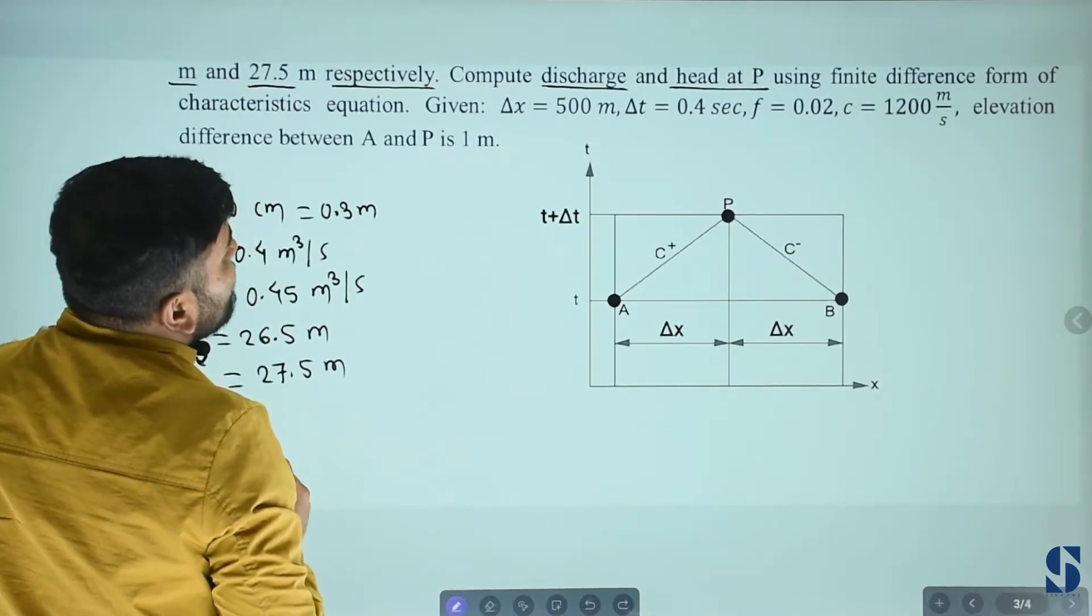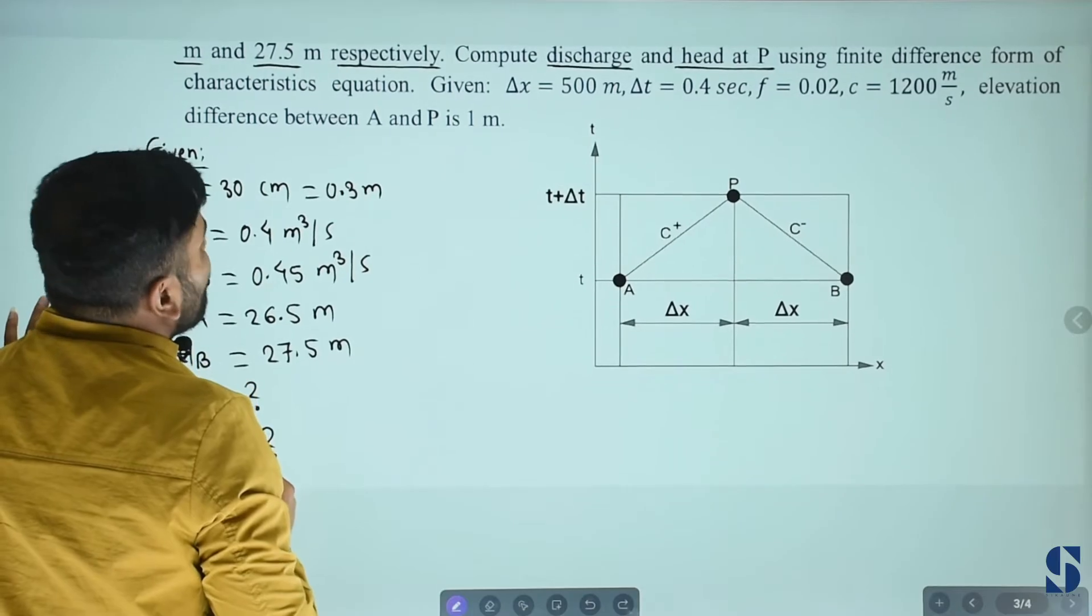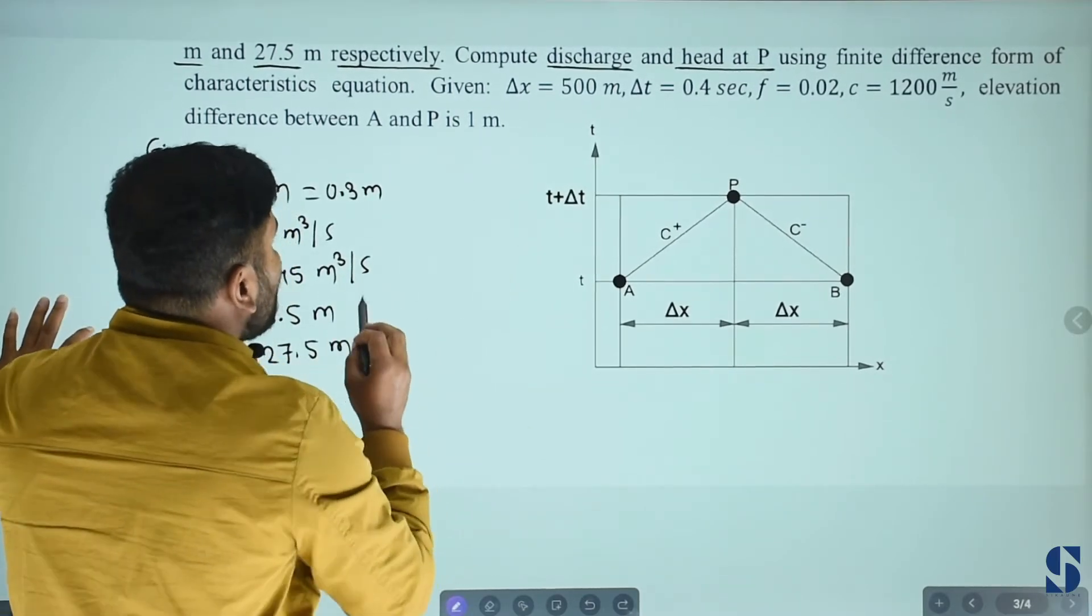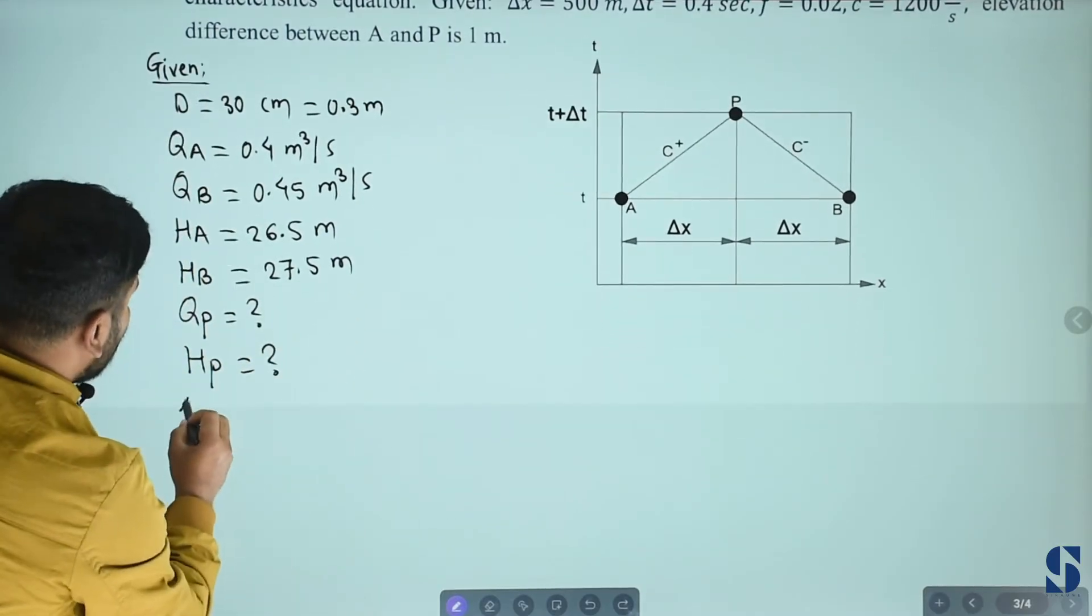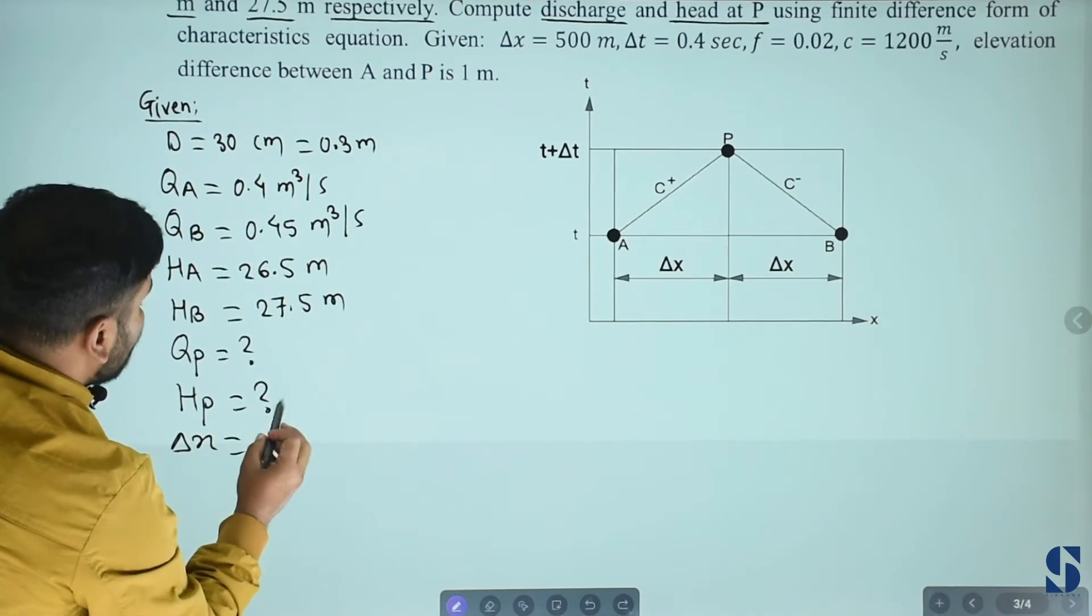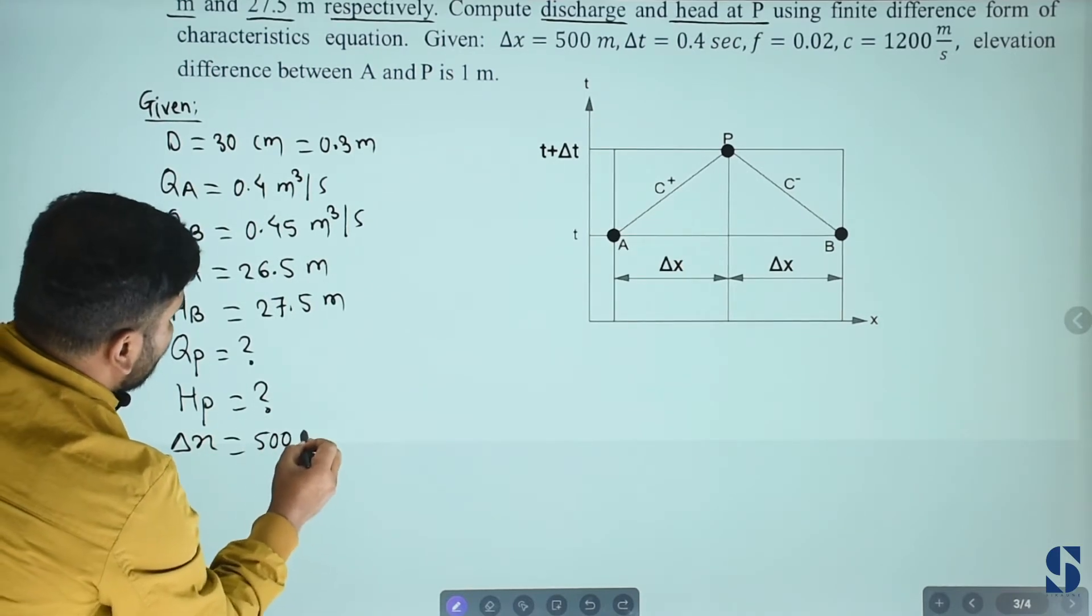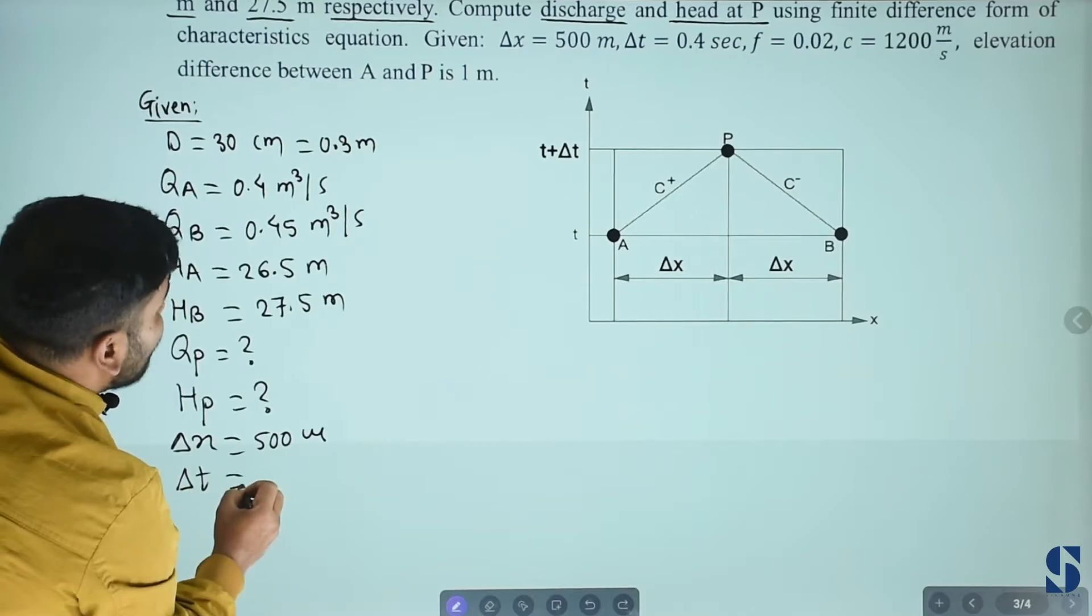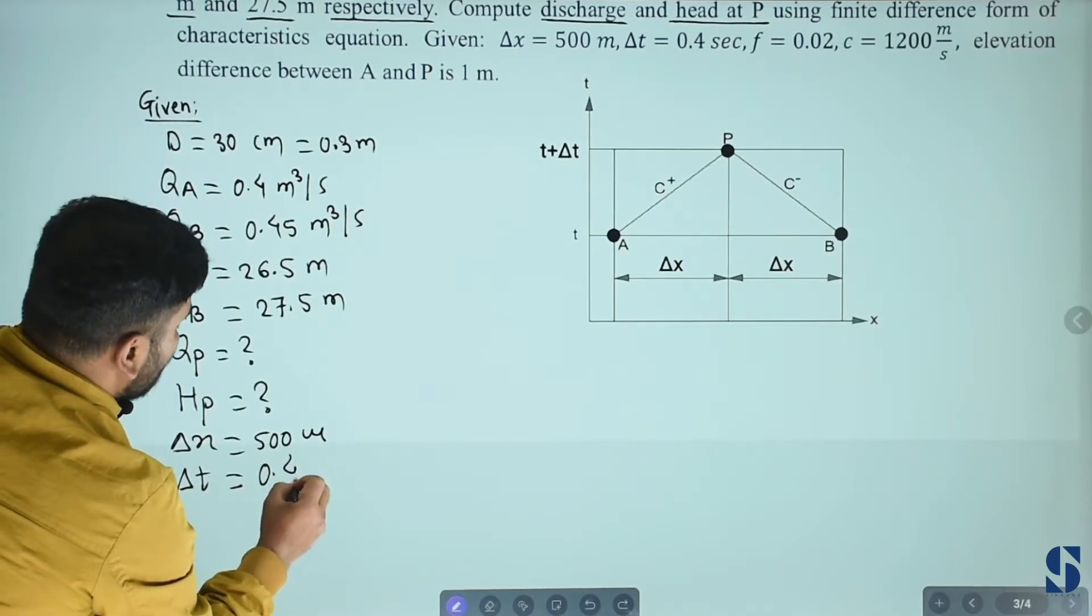Using the finite difference form of characteristic equation. Given delta x equals to 500 meter and delta t equals to 0.4 second.